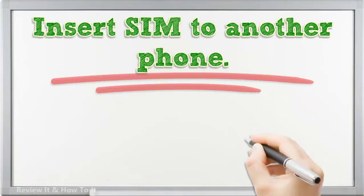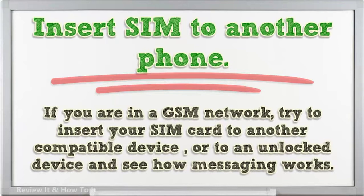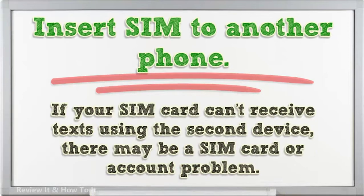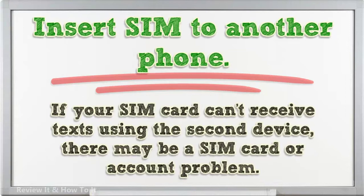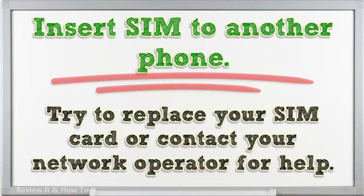Insert SIM to another phone. If you are in a GSM network, try to insert your SIM card to another compatible device, or to an unlocked device, and see how messaging works. If your SIM card can't receive texts using the second device, there may be a SIM card or account problem. Try to replace your SIM card or contact your network operator for help.